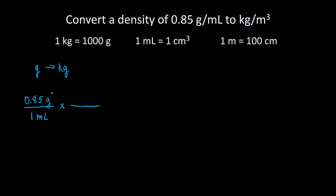We have grams on top of the fraction, so we will put 1,000 grams on the bottom of the fraction so that grams cancel out, and we will put 1 kilogram on top. We have grams on top and grams on the bottom, so grams will cancel out and we will be left with kilograms per milliliter.